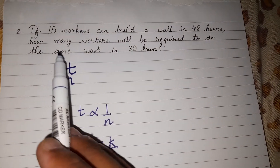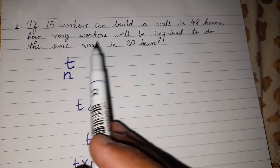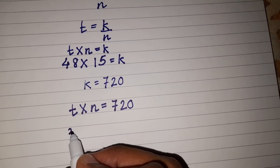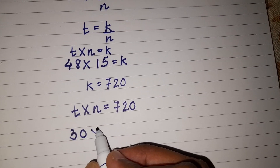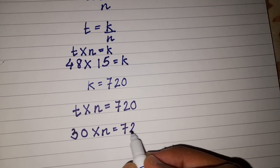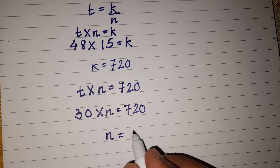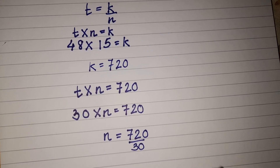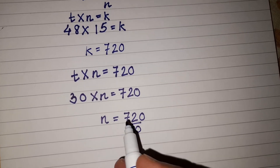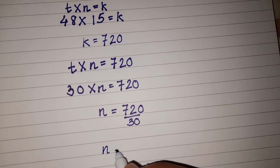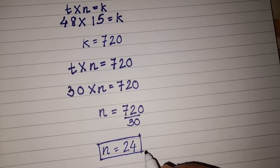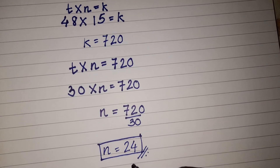The question asks: how many workers will be required to do the same amount of work in 30 hours? We substitute t as 30 into t times n equals 720. Dividing both sides by 30, we get n equals 720 divided by 30, which equals 24. So 24 workers are required to do the same amount of work in 30 hours.